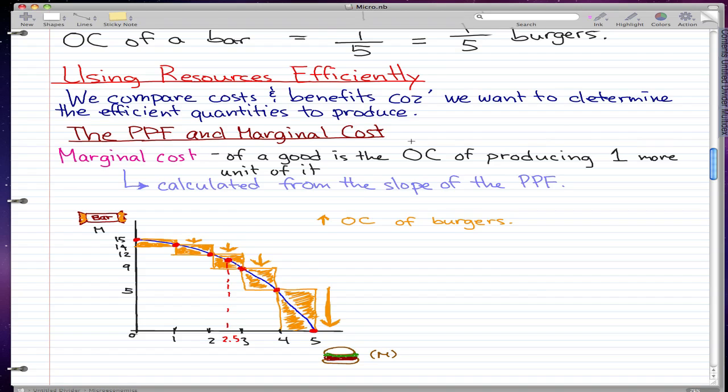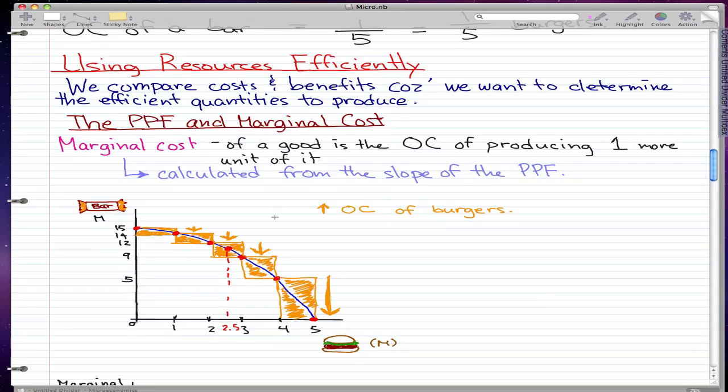The PPF and marginal costs. We already know from past videos that the PPF determines opportunity costs. The marginal cost of a good is the opportunity cost of producing one more unit of it. We talked about this in Chapter 1, that the opportunity cost of producing one more unit of a good is the marginal cost, and the marginal cost is calculated from the slope of the PPF.